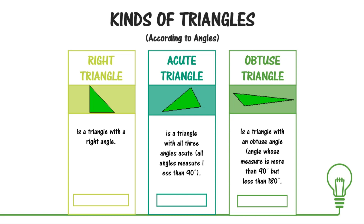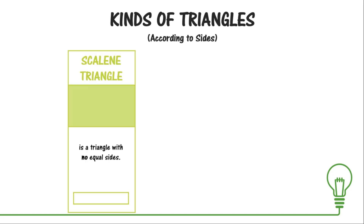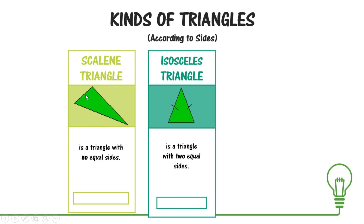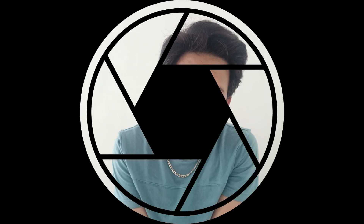The kinds of triangles according to sides: the first is the scalene triangle, which has no equal sides. The isosceles triangle has two equal sides. And the equilateral triangle has all sides equal.